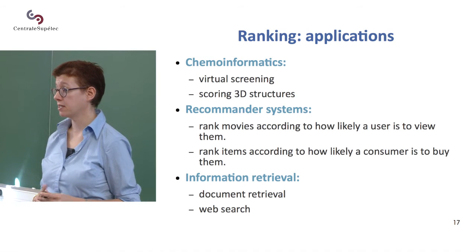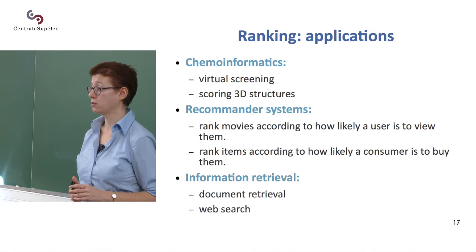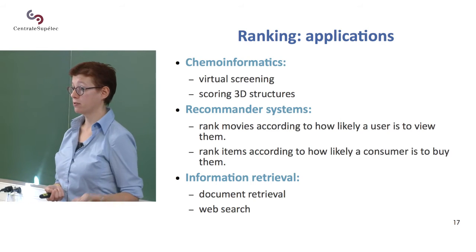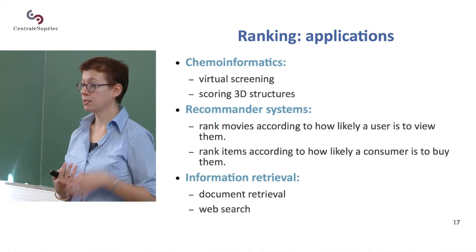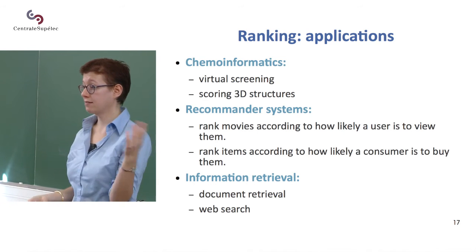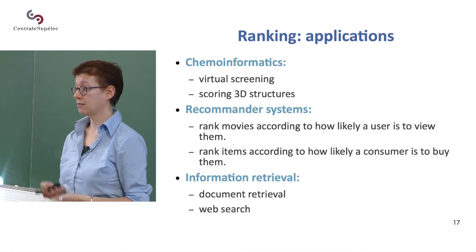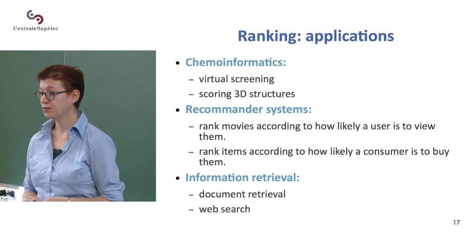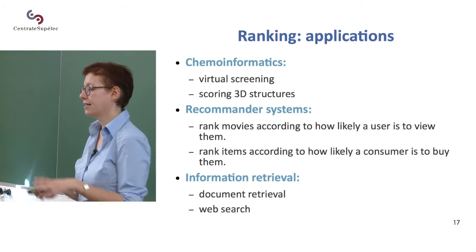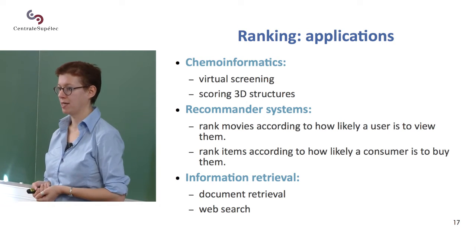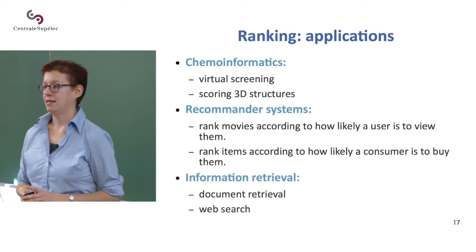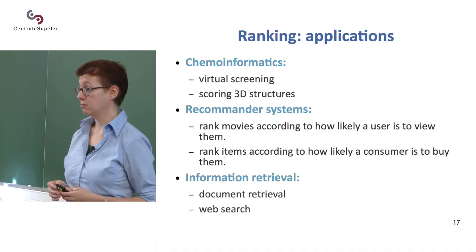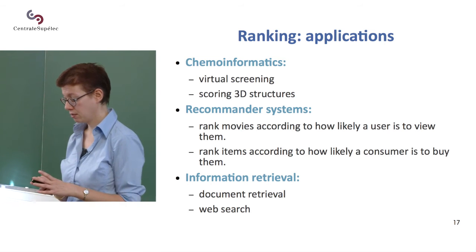Ranking is also involved in recommender systems — what we call Netflix, Amazon, and similar websites that make recommendations based on previous ratings or purchases. They want to rank their catalog and offer only the top-ranked suggestions. In information retrieval — essentially web search — you want to rank web pages or documents in a collection according to query keywords to find the top matches.